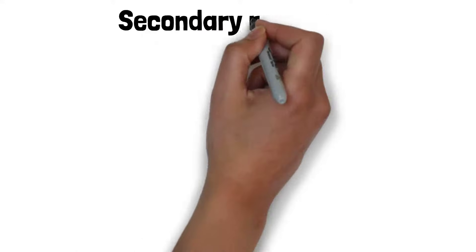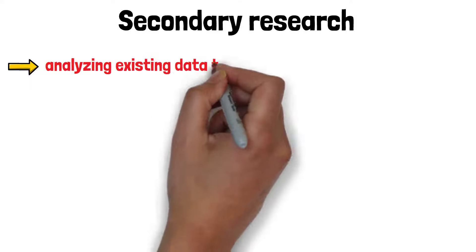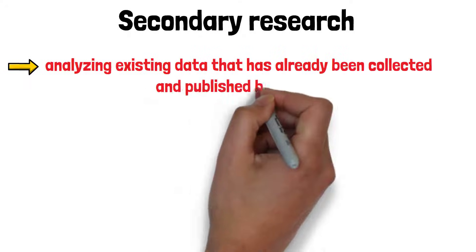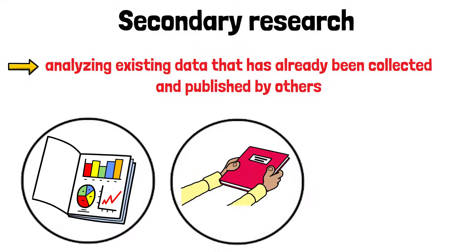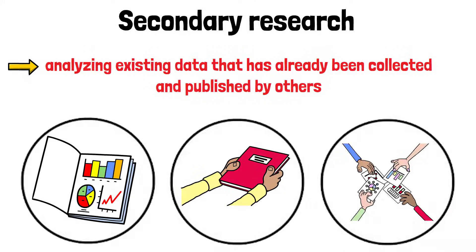In contrast, secondary research involves analyzing existing data that has already been collected and published by others, such as reports, academic papers or statistics from government agencies.